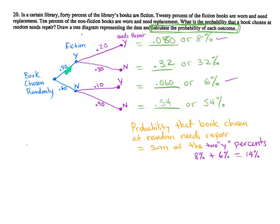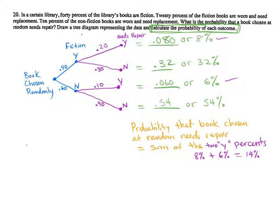Now, for the 40% fiction branch leading to the 20% needs repair — you multiply 0.4 times 0.2 and get 0.08, which is 8%. That means 8% of randomly chosen books are yes fiction and yes need repair. The next outcome comes from multiplying 0.4 times 0.8, which gives 0.32, or 32%. That is the probability of a randomly chosen book being fiction but not needing repair.